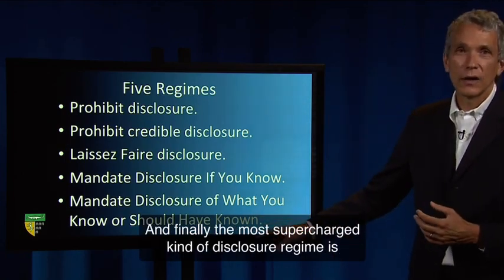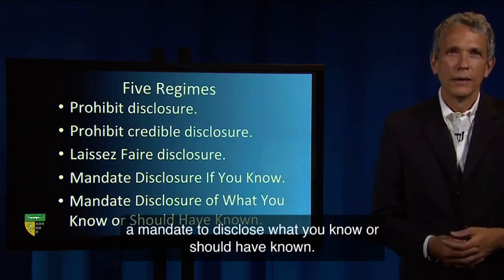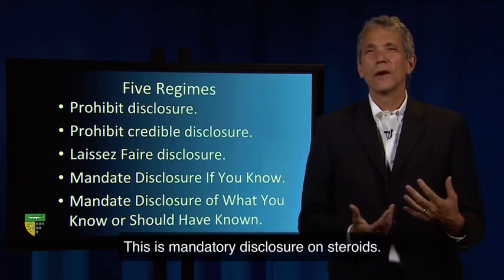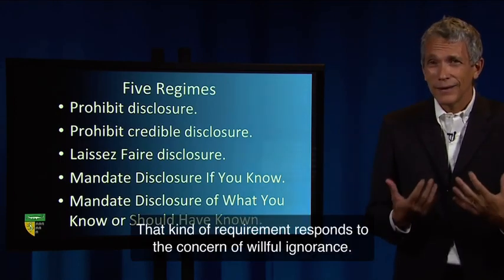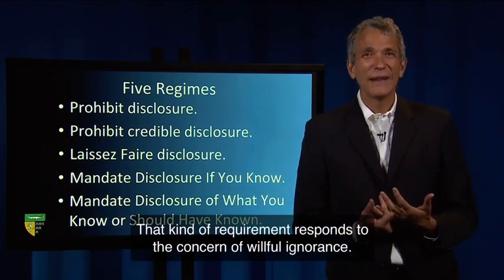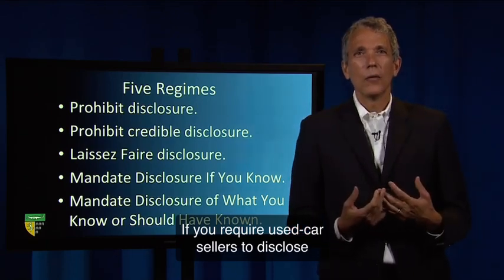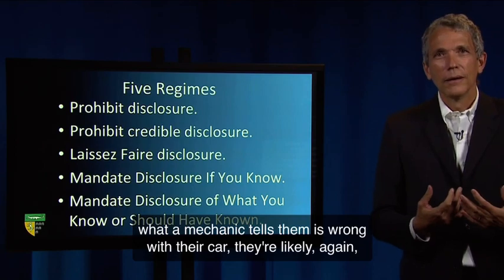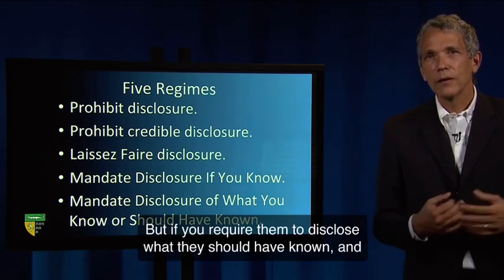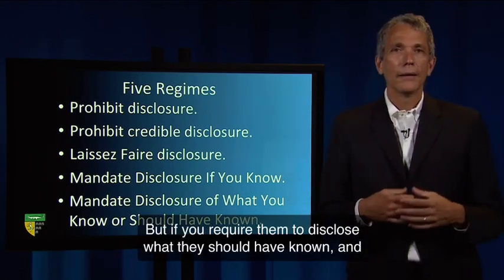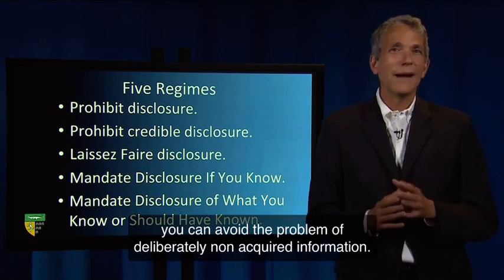Finally, the most supercharged kind of disclosure regime is a mandate to disclose what you know or should have known. This is mandatory disclosure on steroids — it requires disclosing what you should have known. That kind of requirement responds to the concern of willful ignorance. If you require used car sellers to disclose what a mechanic tells them is wrong with their car, they're likely to avoid taking their car to a mechanic before selling. But if you require them to disclose what they should have known — and they should have known what a mechanic tells them — you can avoid the problem of deliberately non-acquired information.